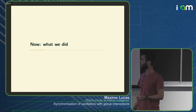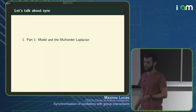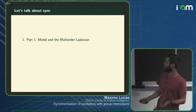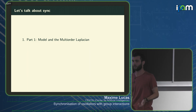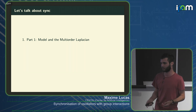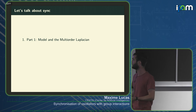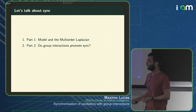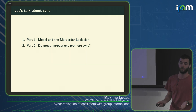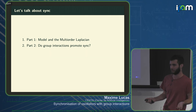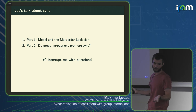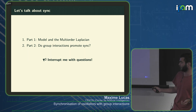The talk is going to be in two parts. First, I'm going to show you the types of models that we use, and then the multi-order Laplacian that we developed as an extension to the normal graph Laplacian to study the stability of synchronization in those types of models. Then I'm going to show you how we use this Laplacian to ask a main question: do group interactions always promote synchronization or not? Feel free to interrupt me at any time.